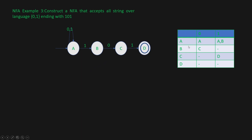Now let's look at the transition table. In state A we get 0, we go to state A itself. If we get input 1, we go to either state A or state B. In state B, we get input 0 and go to state C, but we have not mentioned anything for input 1 — because in an NFA you don't have to mention the trap state or null state. In state C, input 0 goes to the null state, and when we give input 1 we reach state D. In state D, since it's the final state, we have not mentioned what happens when we give further input.